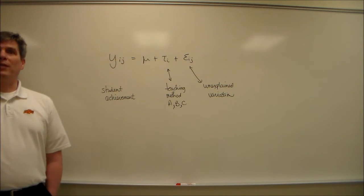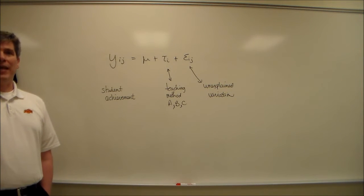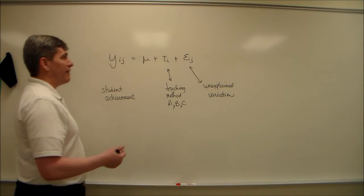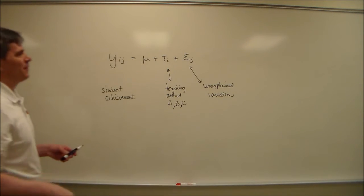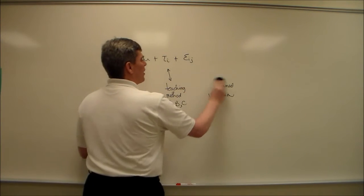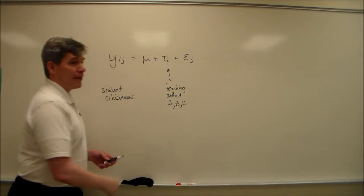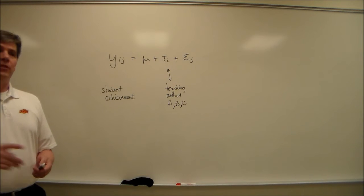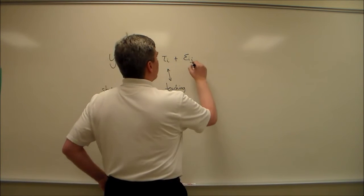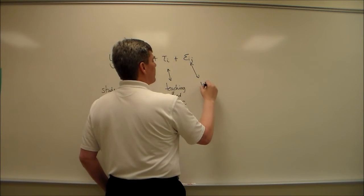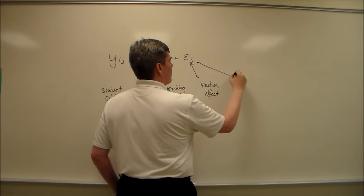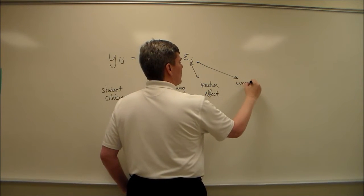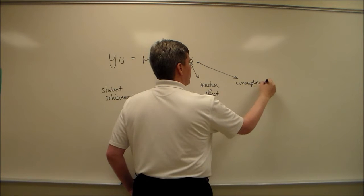Now let's say that we want to add to this. In the last lecture we talked about teachers and how they add some variation. So instead of having the epsilon ij's, let's break that epsilon ij up into some variation that we're going to explain and then some additional variation. So let's break it up into teacher effect and unexplained variation.